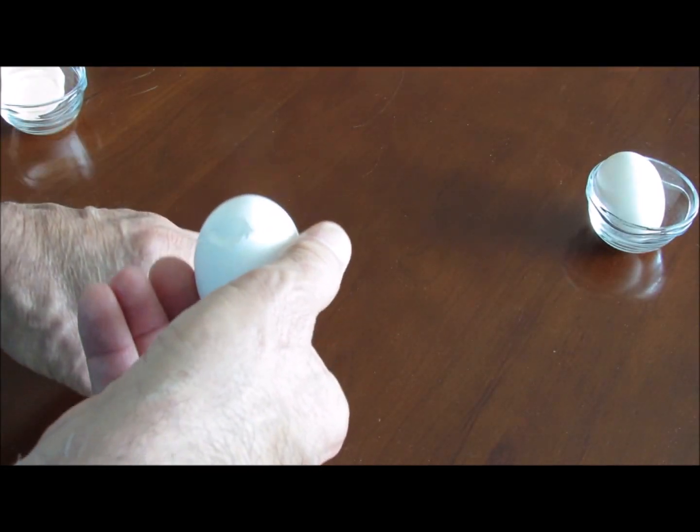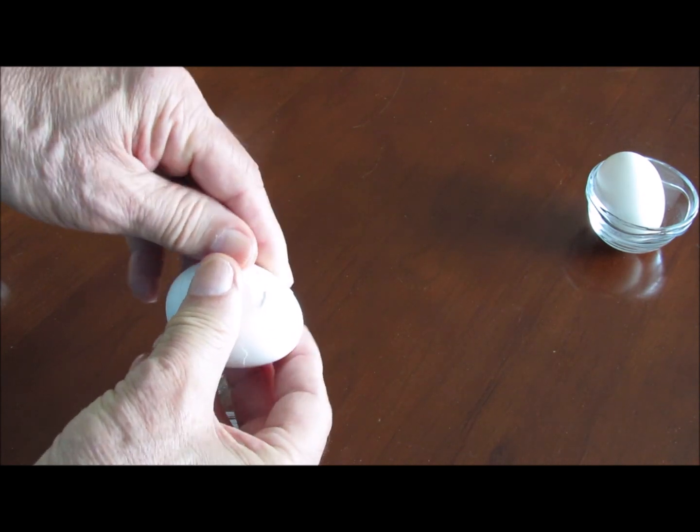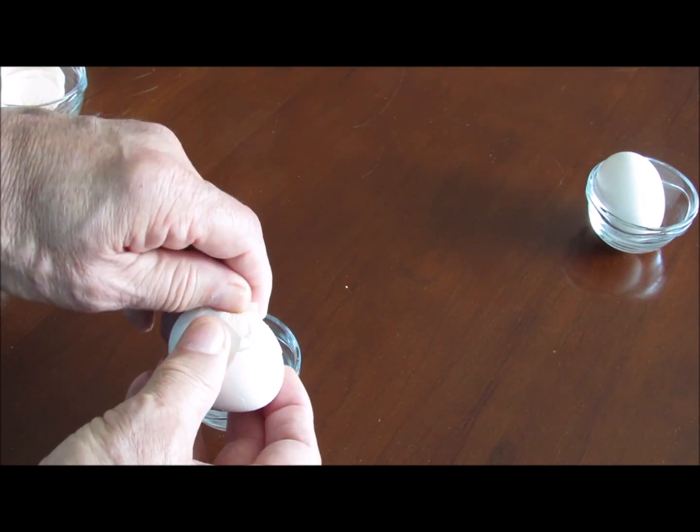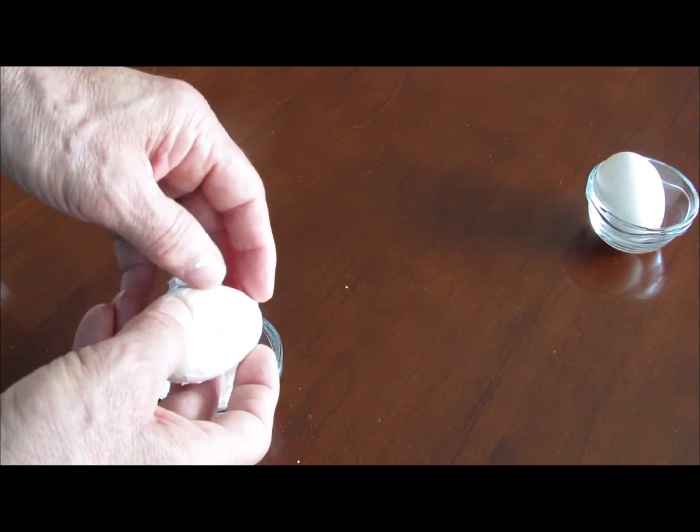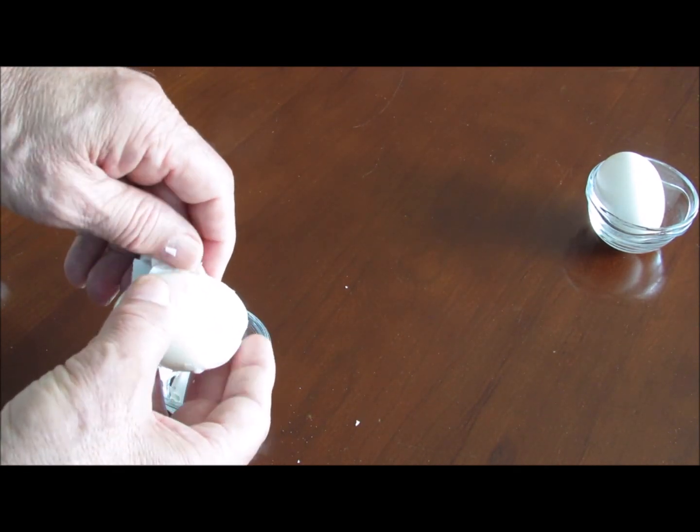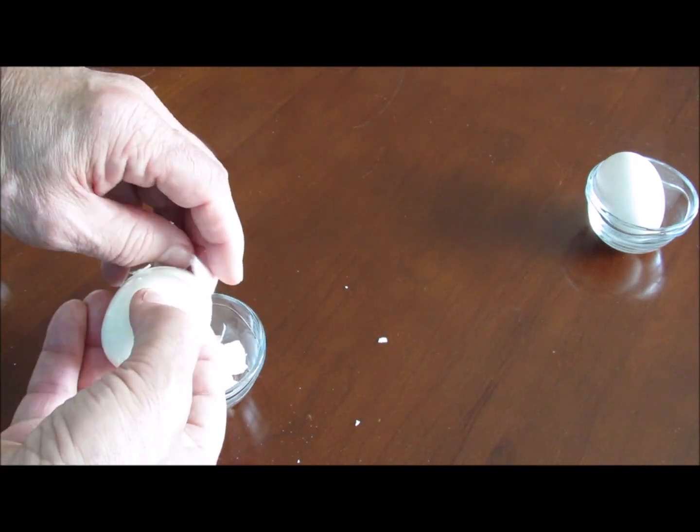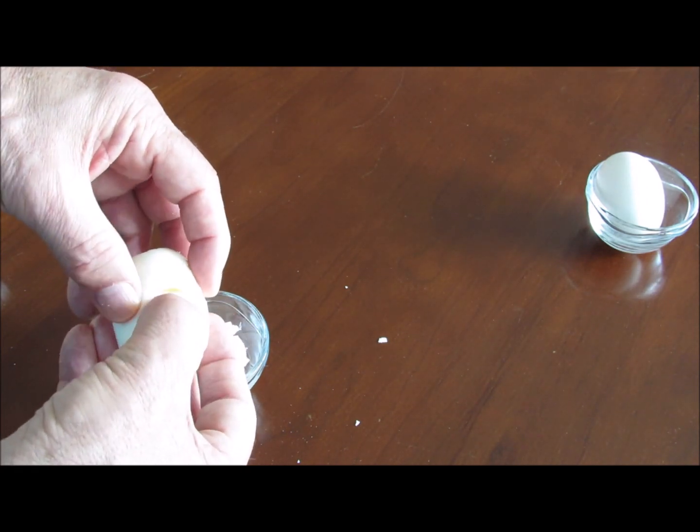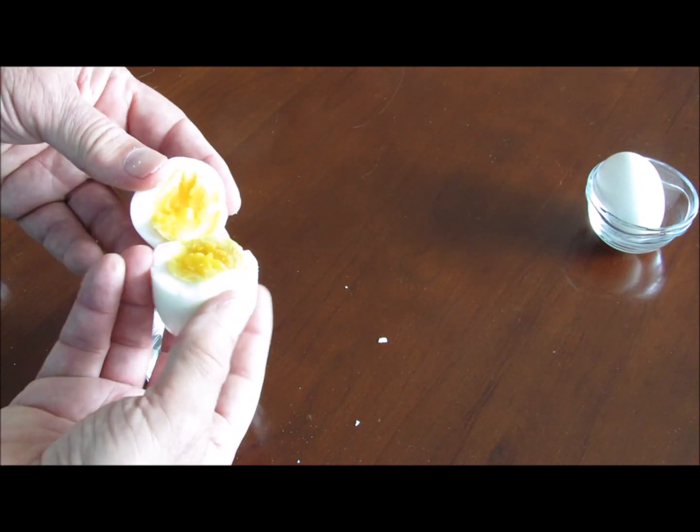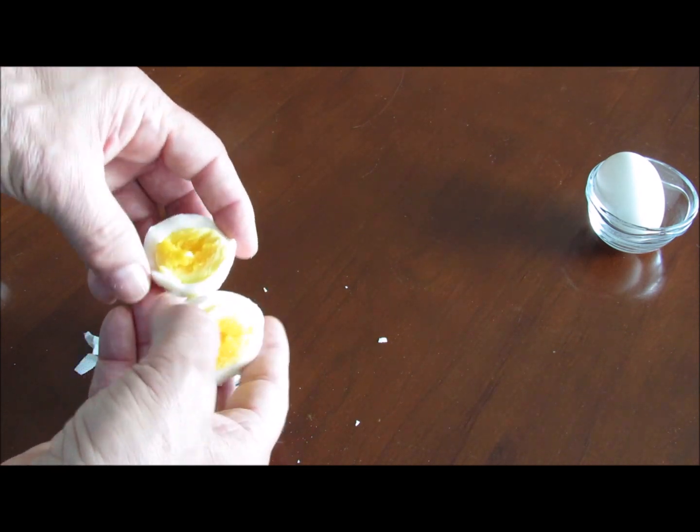We are cracking the second egg and removing the shell. This is the egg that was spinning very well. After removing the shell with some difficulty, we find out that this is a hard boiled egg.